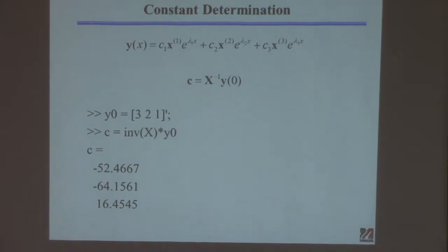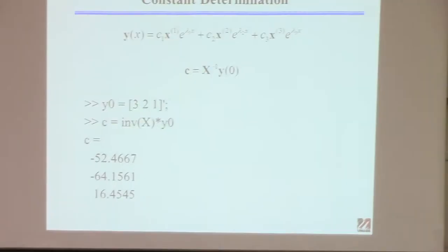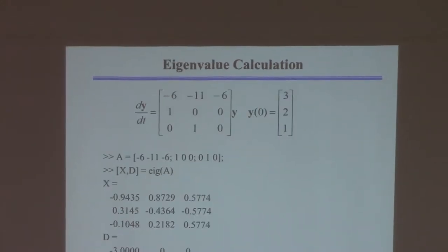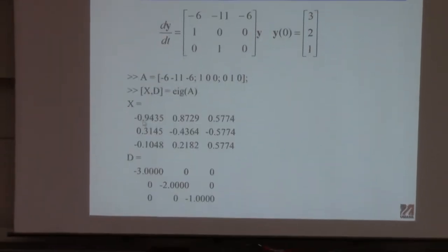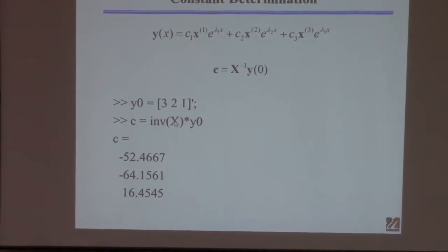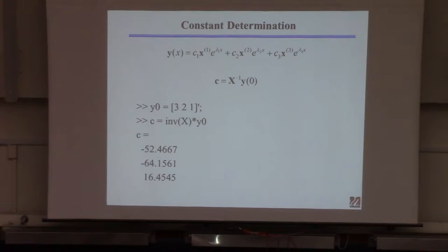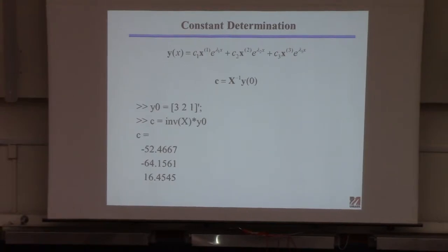I know the solution form, I found the eigenvalues and eigenvectors, and now I need the constants C. I already have the modal matrix X from the eig command. So I take the inverse of X times the initial condition. The initial condition given was [3, 2, 1] as a column vector — I form that, call it Y0, multiply it out, and get the constants. This is the same as analytical work, but now using MATLAB.